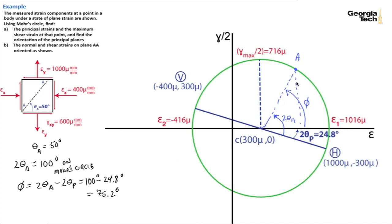For our triangle now, sine of phi will be the opposite side over the hypotenuse, which is the radius. So sine of phi equals the opposite side, which is the shear strain at A, gamma sub A divided by 2, over the radius R or 716 mu. So gamma sub A divided by 2 equals 716 times sine of 75.2 degrees, or gamma sub A over 2, the shear strain divided by 2 at point A, will be 692 mu radians.